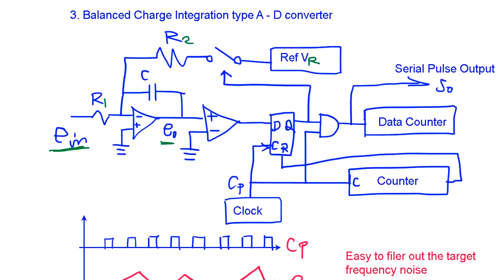So what happens is there is a comparator here. When this becomes positive, then clock will go through and we count number of clocks. When this goes negative here, then this one shuts off, no clock. So we count number of clocks going through here.